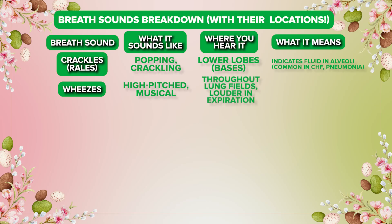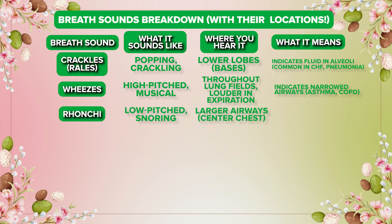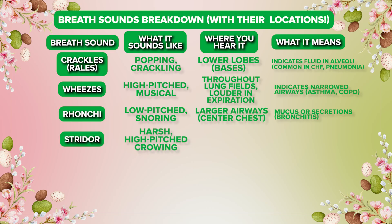Wheezes are high-pitched sounds that can be heard throughout the lung fields, louder during expiration. They indicate a narrowed airway and are seen in asthma and COPD. Rhonchi are low-pitched sounds, mainly located in the center of the chest, indicating mucus or secretions in the lungs — commonly seen in bronchitis.